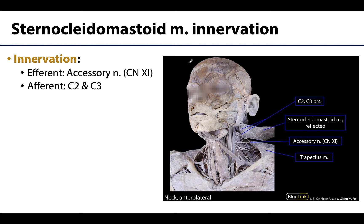The innervation of the SCM is unique in that one nerve does not have both afferent and efferent fibers, as is the case for most muscle innervation. Instead, for the sternocleidomastoid, there are separate nerves providing efferent or motor innervation and afferent or sensory innervation. The accessory nerve provides the efferent innervation and is our first introduction into a cranial nerve — cranial nerve XI. The accessory nerve is entirely efferent, so it could not provide sensory innervation.